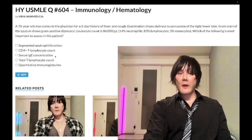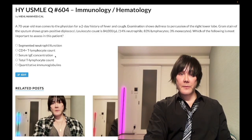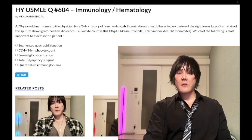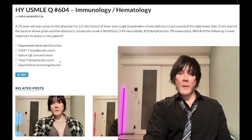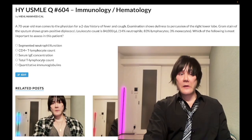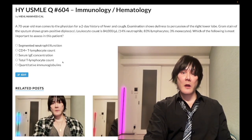Choice D is total T cell count — wrong answer, absolute nonsense. The CMS form has CD4 count for choice B and just T cell count for choice D, and neither gets us any further. The answer is quantitative immunoglobulins.